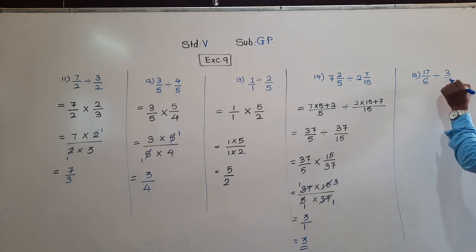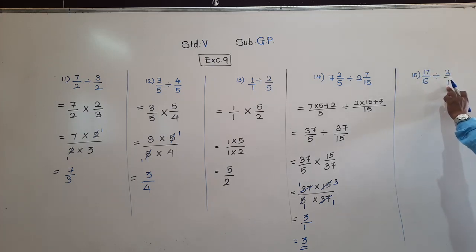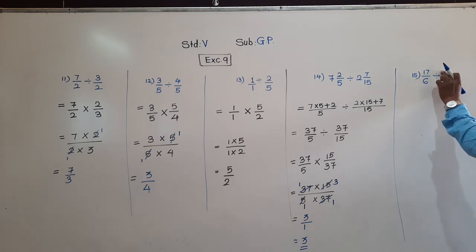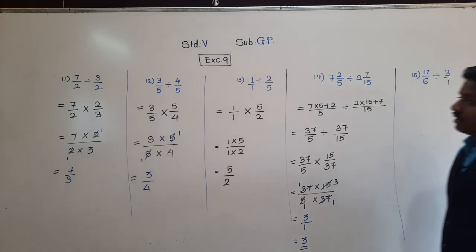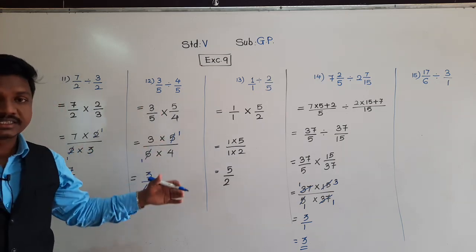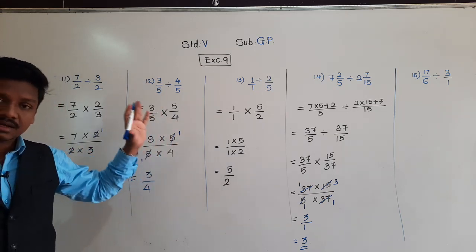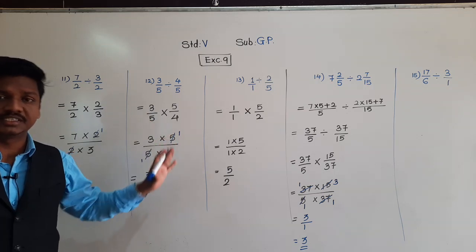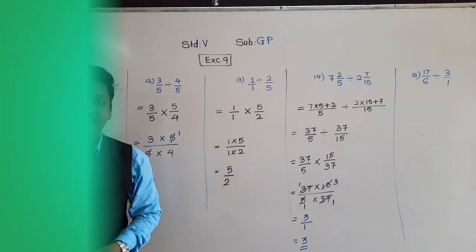Q15: 17/6 ÷ 3. You have to solve this one by yourself. When there is only 3, that means it has denominator 1, so write it as 3/1. Change division to multiplication and write the reciprocal: 1/3. Watch this video again if you need to — understand the process and method. It is very easy and interesting. Thank you for today and have a nice day.